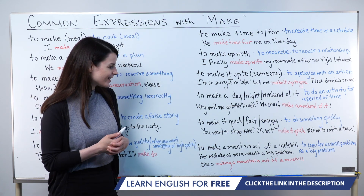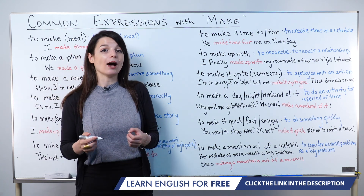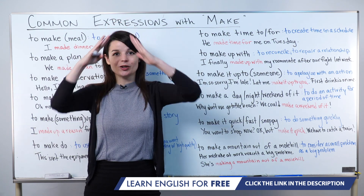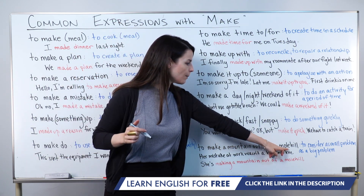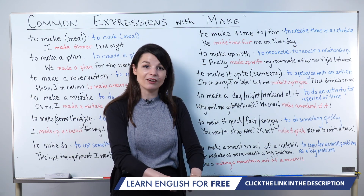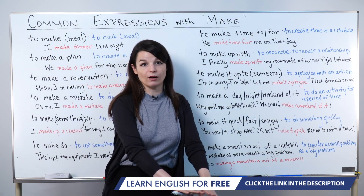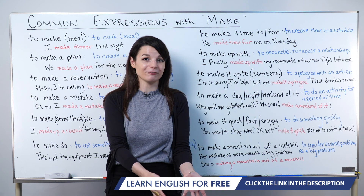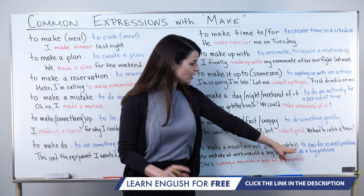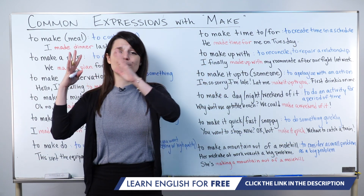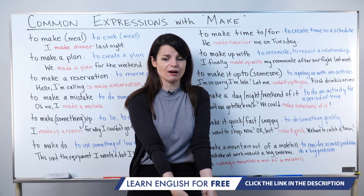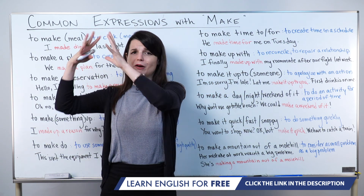The last expression for this lesson is to make a mountain out of a molehill. A mountain is of course a very large part of nature. A molehill comes from a small creature called a mole that lives in the ground — a molehill is very small. So a mountain is very large and a molehill is very small. This expression means to consider a small problem as a big problem.